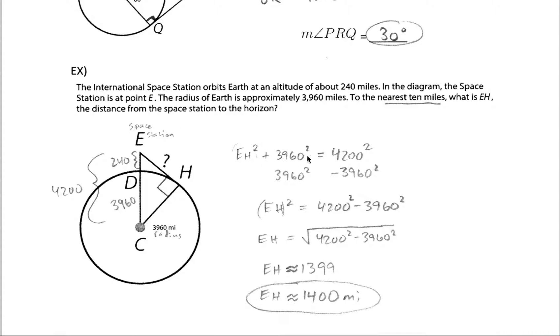Now you could square both these numbers and work with those even really big numbers, but we don't want to complicate things. Let's keep it simple. Let's just use some algebra steps here. Subtract 3960 squared from both sides and then square root both sides.